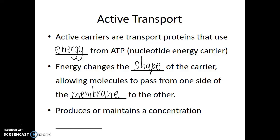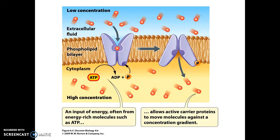In this example, there's a low concentration of a molecule outside of the cell, but the cell wants more and is willing to spend energy to get it, even though there's already a high concentration inside. In its default resting state, the active carrier is open to the outside of the cell. When one of these molecules binds to it, a molecule of ATP powers the change in shape of this carrier protein. Once energized, it releases the transported molecule inside the cytoplasm. Once the phosphate group is released from the active carrier, it reverts back to its original shape, allowing another molecule from outside to enter.